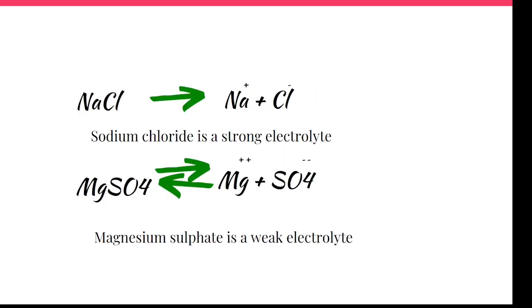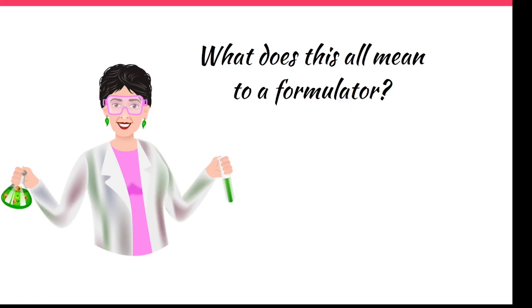There are strong and weak electrolytes, and this is something good to know if you are formulating. Sodium chloride, for example, completely dissociates into sodium and chloride ions and is considered a strong electrolyte. Magnesium sulfate, in contrast, doesn't completely dissociate — at any time you have some magnesium sulfate, some magnesium ions, and some sulfate ions — so it is considered a weak electrolyte.